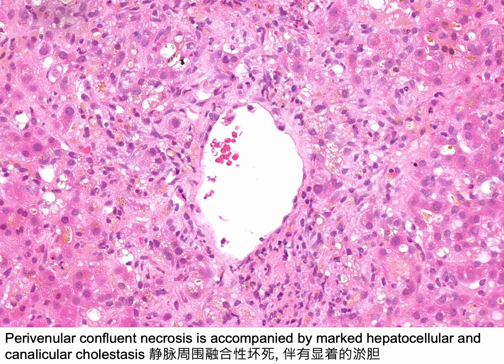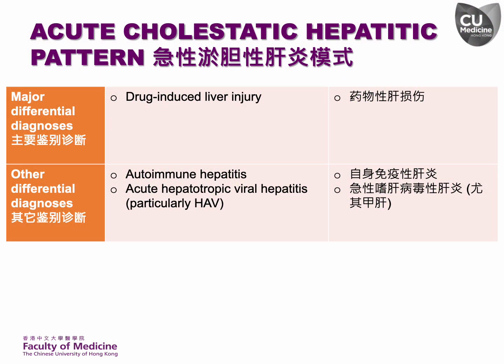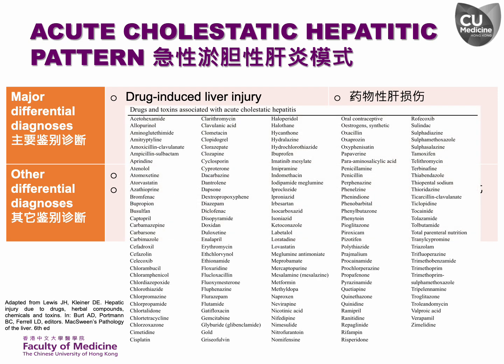Perivenular confluent necrosis is accompanied by marked hepatocellular and canalicular cholestasis. Hepatocellular and canalicular cholestasis are observed alongside confluent necrosis and regenerating hepatocytes. The primary cause of the acute cholestatic hepatitic pattern is drug-induced liver injury. However, this pattern can also be observed in cases of autoimmune hepatitis and acute hepatotropic viral hepatitis, particularly viral hepatitis A. This table provides different drugs and toxins associated with the acute cholestatic hepatitic pattern.